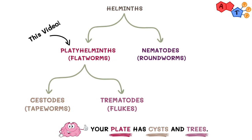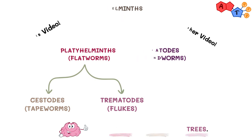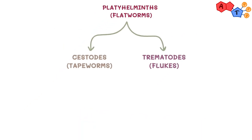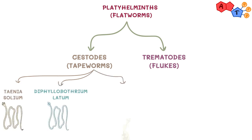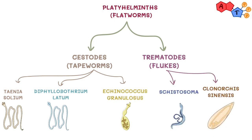In this video, we will focus on the platyhelminths, and we'll leave the nematodes for another video. Going back to our classification, under cestodes or tapeworms, we will talk about Taenia solium, Diphyllobothrium latum, and Echinococcus granulosus. Whereas for trematodes or flukes, we will talk about Schistosoma and Clonorchis sinensis. Please keep in mind that these two categories include more species, but these are the ones commonly tested in board examinations.